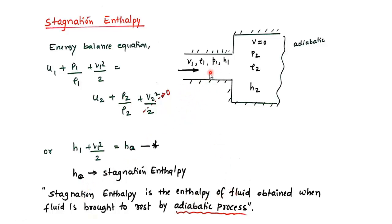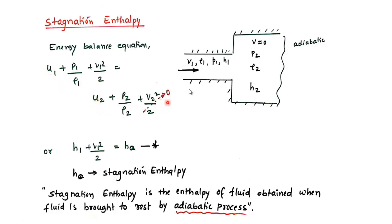The reason only adiabatic (not isentropic) is required for stagnation enthalpy: even if friction is present, the rise in temperature due to friction affects internal energy u, but since internal energy appears on both sides of the equation, the change due to friction cancels out. Friction does not affect Δu in the overall energy balance. Therefore, we allow friction and only require the adiabatic condition.